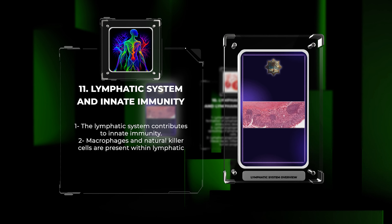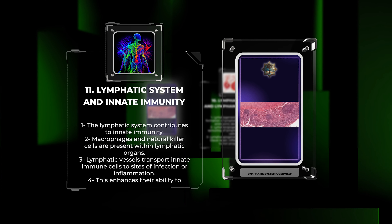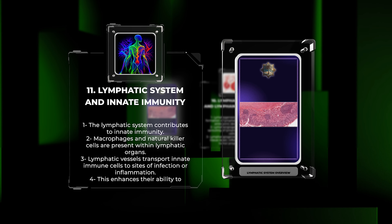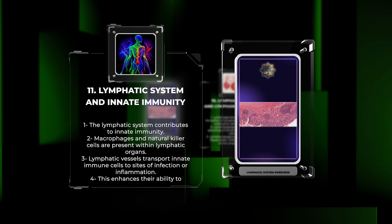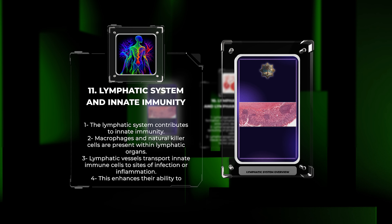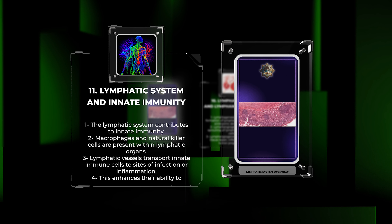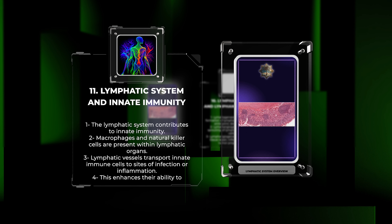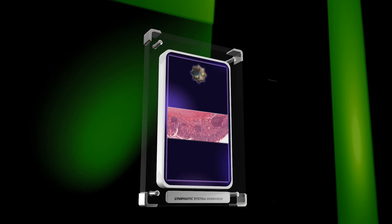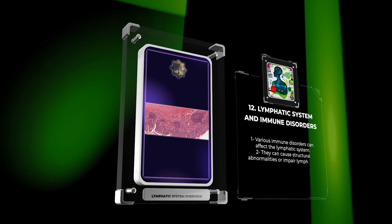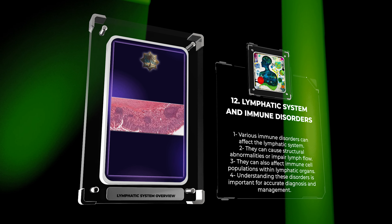In addition to adaptive immunity, the lymphatic system also contributes to innate immunity — the body's immediate defense mechanisms against pathogens. Innate immune cells such as macrophages and natural killer (NK) cells are present within lymphatic organs and contribute to the recognition and elimination of pathogens. Lymphatic vessels also facilitate the transport of innate immune cells to sites of infection or inflammation, enhancing their ability to combat pathogens effectively.